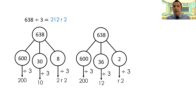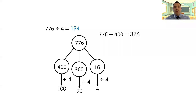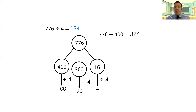Let me share the previous question with you — 776 ÷ 4 — and how we could have done it differently. We didn't actually need to split off the 16 and the 360 separately. If we were confident with our division skills, we could have done 376 divided by 4 directly, taking a step out. That comes down to your confidence with the numbers. If you're confident with your times tables, give it a really good go. So you could just have had two parts to this model: 360 and 16. There are lots of different ways — we need to be flexible with our partitioning.